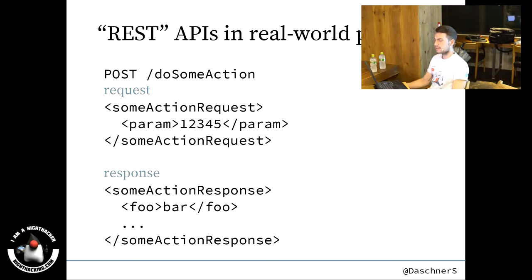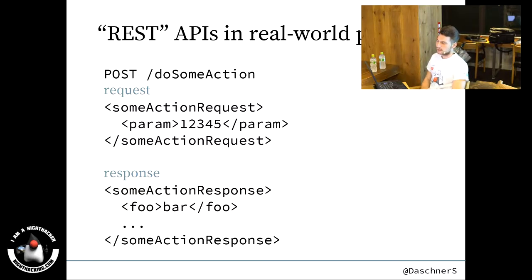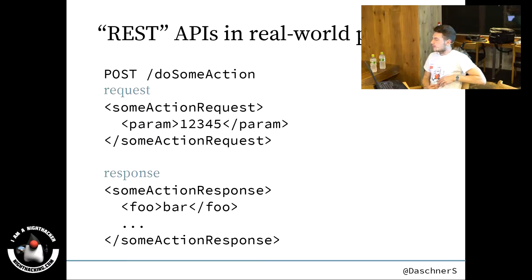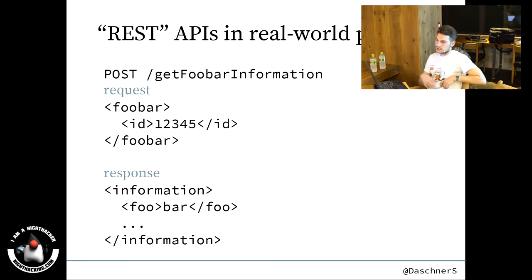Maybe you have seen something like this in real-world projects. This is an HTTP example of how an HTTP call could look like. We are posting some request body information to a URL called 'do some action' or 'make some action'. We have a request body and a response body with some input and output parameters and this verb URL. If you look at it, it somewhat looks like an RPC — remote procedure call over HTTP.